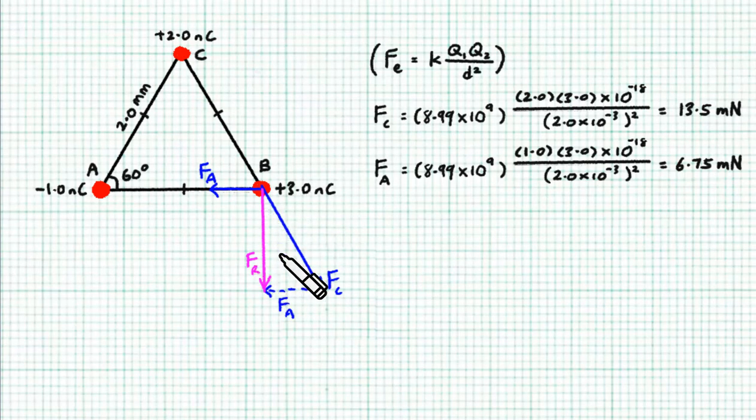Because I've chosen very nice numbers for this problem, the resultant force turns out to be a vertically downward force. Because Fc turns out to be exactly twice Fa, and because these are all equilateral triangles,